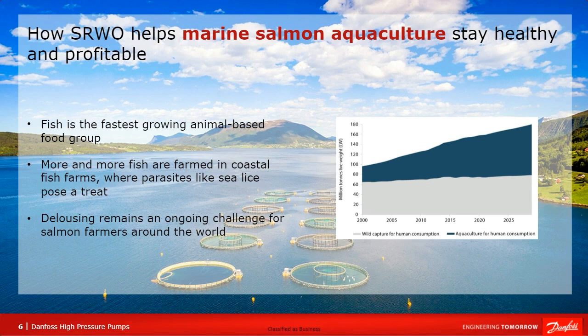A typical life of a farmed salmon starts in land-based hatcheries where the fish begin their life. After growing to a certain size, the fish are then typically transported to open net pens located in coastal areas. Here they have a free flow of seawater entering the net pens, which creates a natural environment for the salmon — but of course it also allows other organisms and parasites to enter these open net pens.